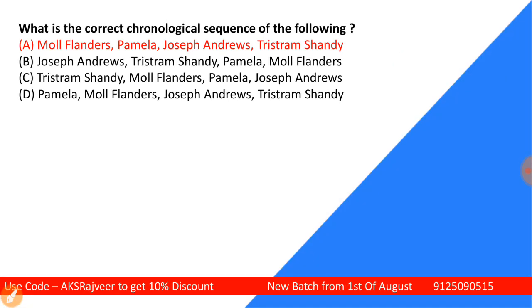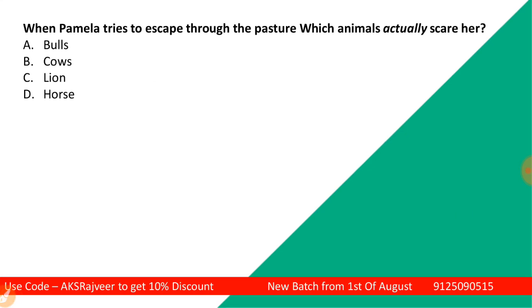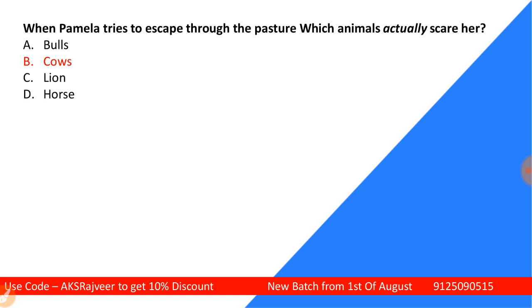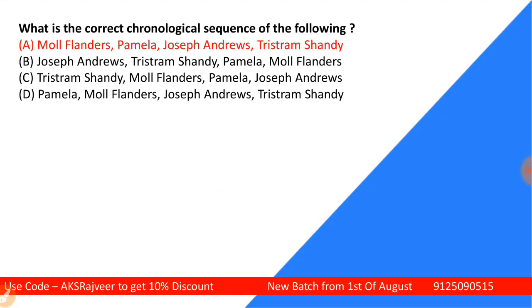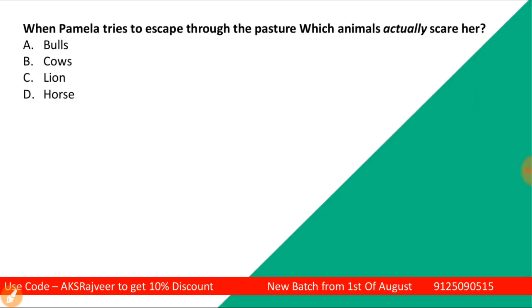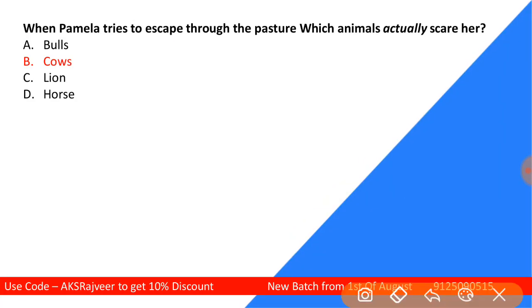Next question: When Pamela tries to escape through the pasture, which animal actually scares her? Options are bulls, cows, lion, or horses. The correct answer is cows — she was scared of cows because she considered them as bulls. There were two cows — must remember the point, there were two cows.